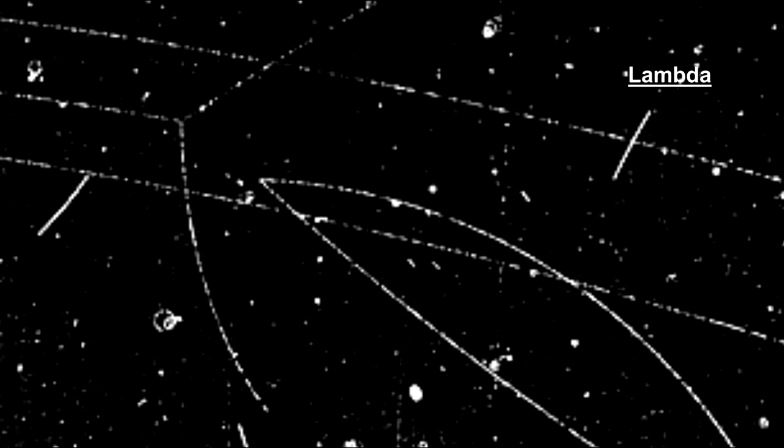In 1947, the lambda particle was discovered. Here we see a v-shape with the creation of a pion and a proton.